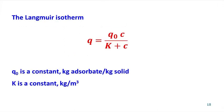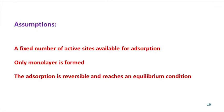The Langmuir isotherm has a theoretical basis and is given by the equation Q equals Q₀C divided by (K plus C), where Q₀ is a constant with units of kg of adsorbate per kg of solids, C is the concentration in the liquid phase, and K is a constant with units of kg per meter cube. The equation was derived assuming that there are only a fixed number of active sites available for adsorption, only a monolayer is formed, and the adsorption is reversible and reaches an equilibrium condition.